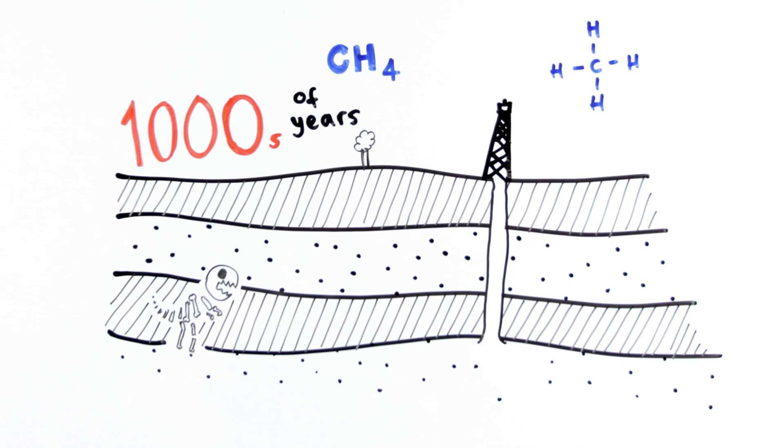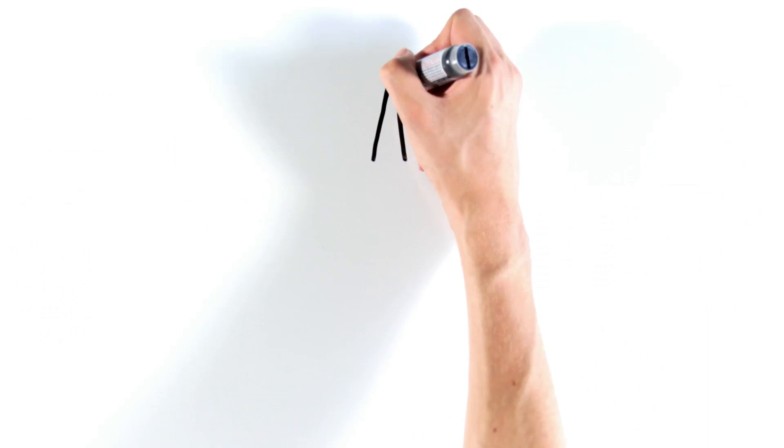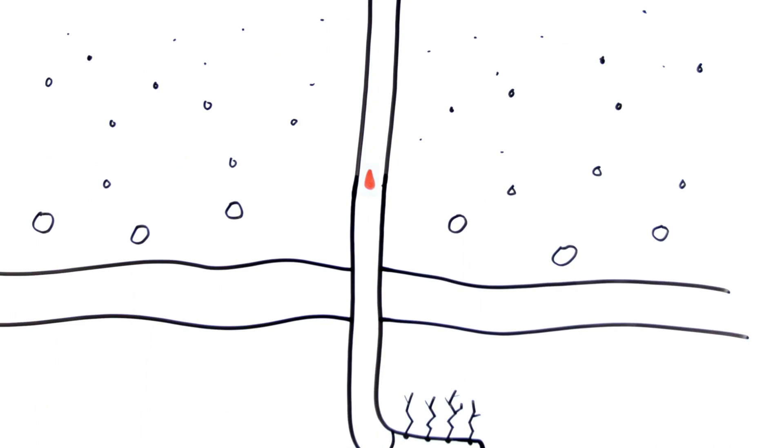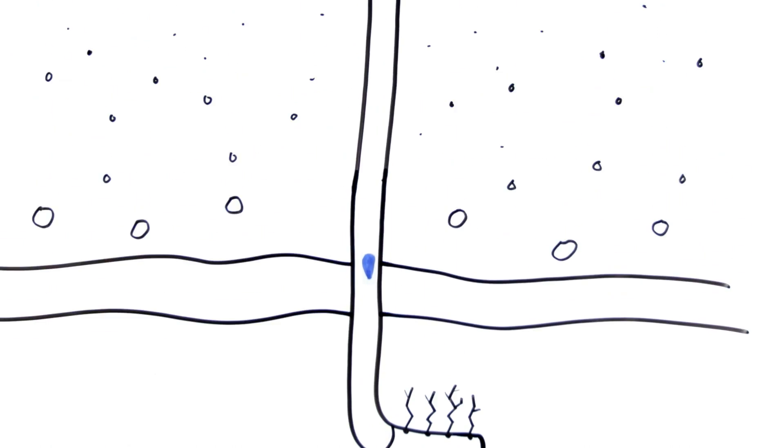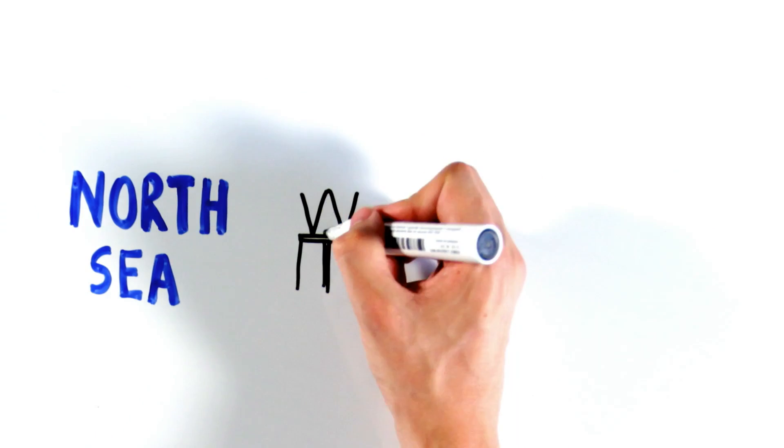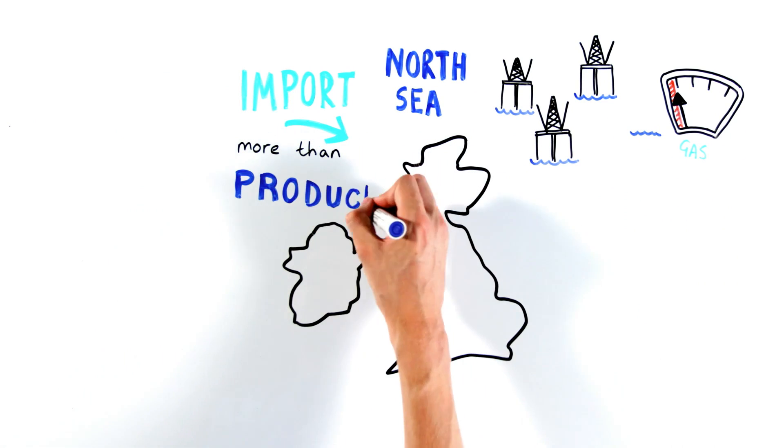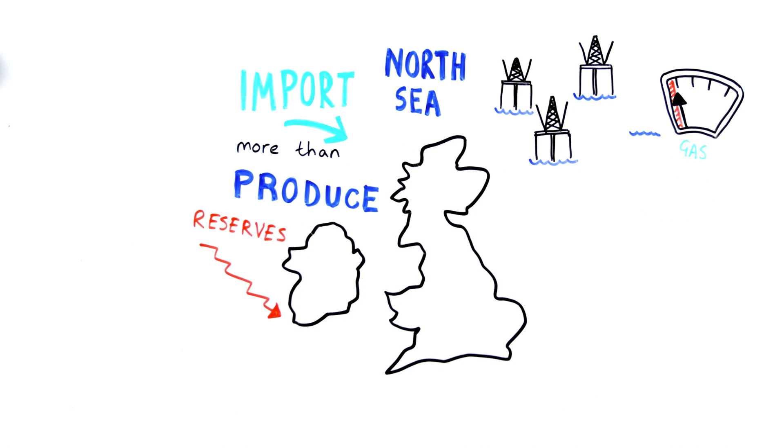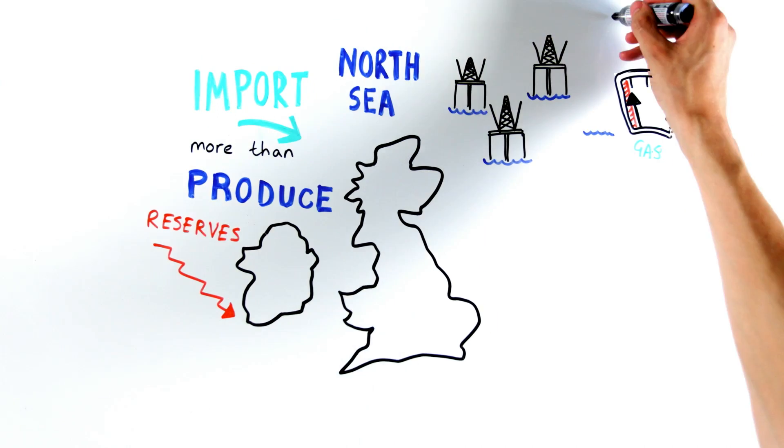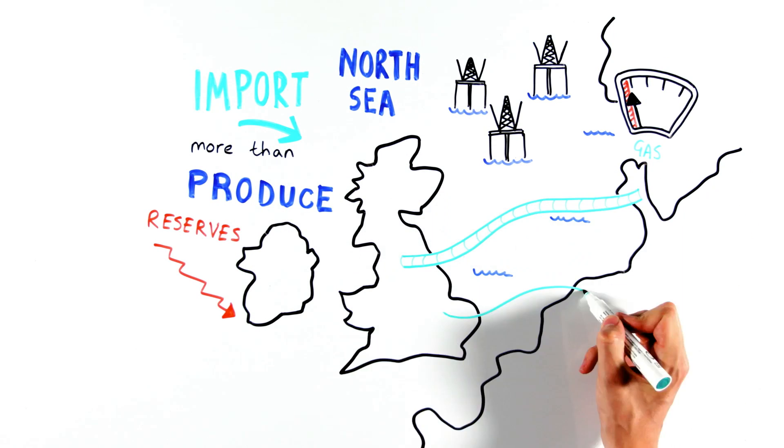The problem is, as gas fields start to run out, gas companies have to move on to more expensive and riskier methods to get their gas. In the UK, our gas has almost run out, so we now import more gas than we produce. And as our reserves decline, it won't be long before we completely depend on gas imported from other countries.